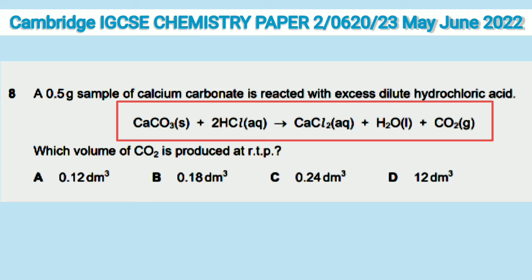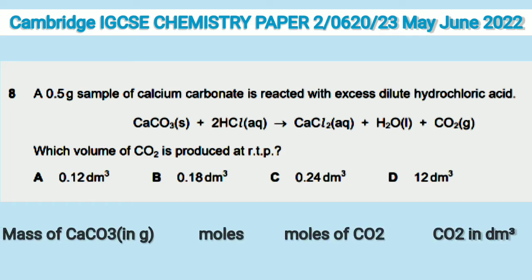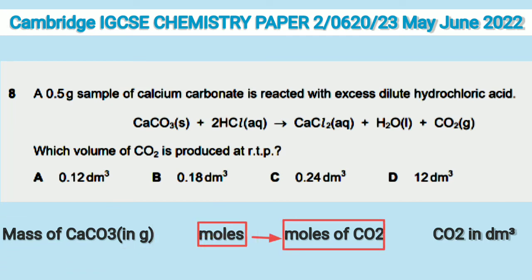From the equation we know that one mole of calcium carbonate gives one mole of CO₂. Before the actual calculation, let's see what steps we have to follow. First, the mass given in grams of calcium carbonate has to be converted into moles. The same number of moles of CO₂ will be produced, but the answer is required in dm³, so we will convert moles to dm³.